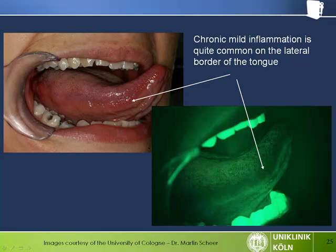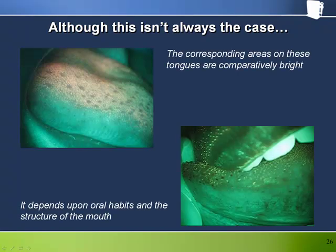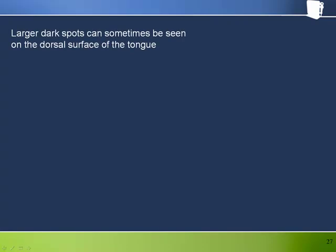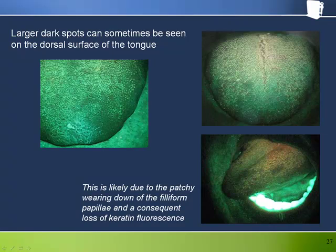The redness along the lateral border is well visualized in white light and corresponds directly with the homogeneous dark band seen through the Velscope. Of course, everybody is different and what we have just seen isn't always the case — the corresponding areas on some tongues are comparatively bright, depending on oral habits and the structure of the mouth. Larger dark spots can sometimes be seen on the dorsal surface of the tongue, likely due to patchy wearing down of the filiform papilla from use, resulting in a dark patch due to loss of keratin fluorescence.